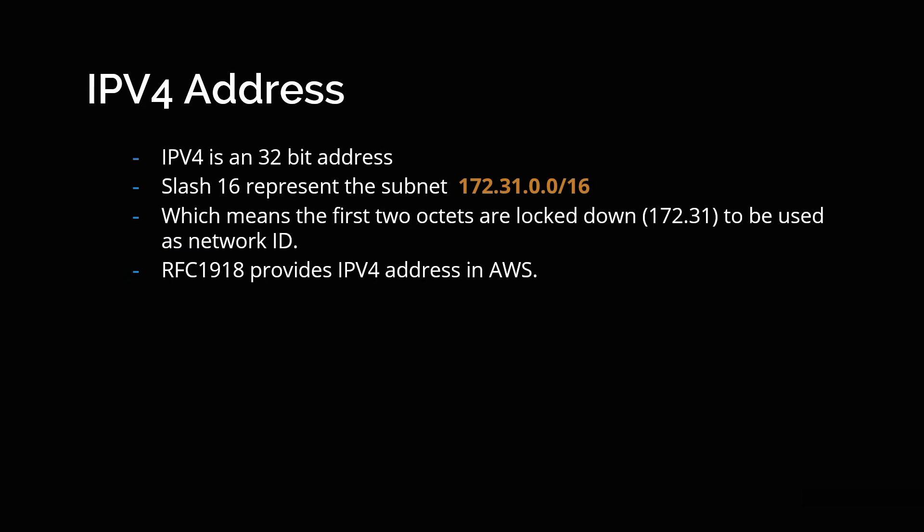Now there are two types of IP addresses: IPv4 and IPv6. IPv4 is a 32-bit address. For example, 172.31.0.0/16 — when you say slash 16, it means the first 16 bits are fixed. So here 172.31 is fixed and the remaining bits are assigned to the host. In AWS, IPv4 addresses are provided by RFC 1918, which is the standard that defines the private IPv4 address ranges.